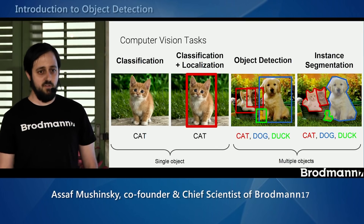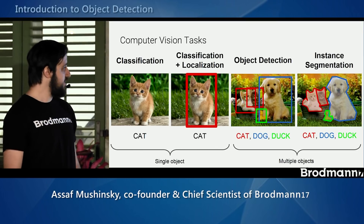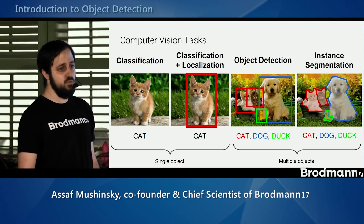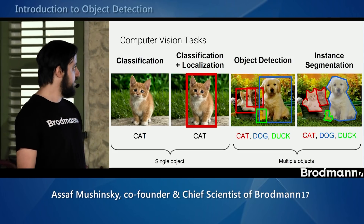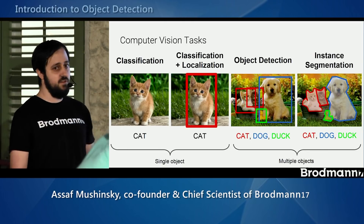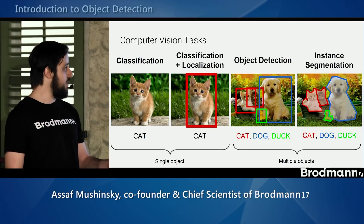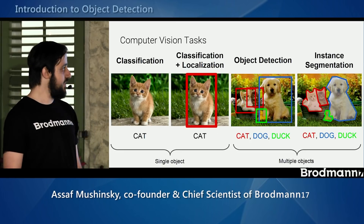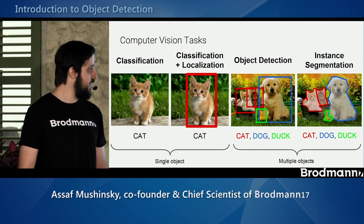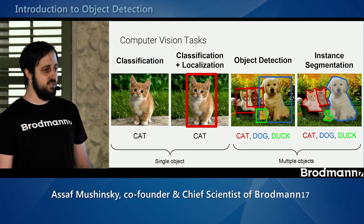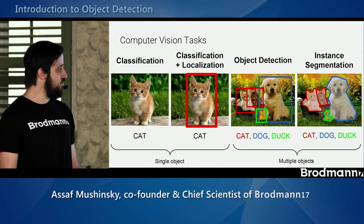You can see examples of computer vision tasks. The basic is classification — we only want to know what's in the image, we don't care about localization. The next step is asking where that object is in the image, which is usually an easy task because images contain just one main object. Object detection takes this to the next level: we have multiple objects at various sizes and even multiple classes, and we need to know exactly where they are. Finally, instance segmentation is where a bounding box isn't enough and we need to give the boundary of the object.